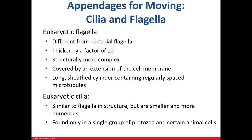Let's discuss structures that eukaryotes use for movement. The flagella is more complex than what we discussed in prokaryotes — it's much thicker and has an outer covering made of the cell membrane. They also have cilia, which are more abundant and smaller than flagella. It's common in organisms like paramecium and in our respiratory tissue.